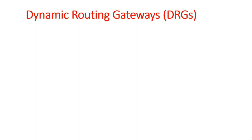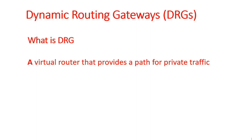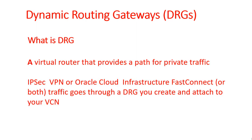Dynamic Routing Gateways, DRGs. A DRG is a virtual router that provides a path for private traffic. Whether using IPsec VPN or Oracle Cloud Infrastructure FastConnect, or both, traffic goes through the DRG. You create it and attach it to your VCN, so all the traffic from your data center has to go through Dynamic Routing Gateways.